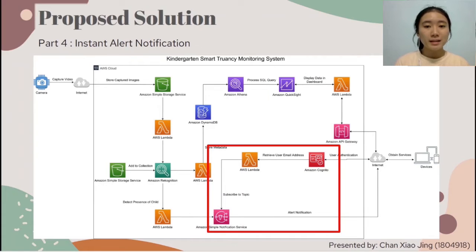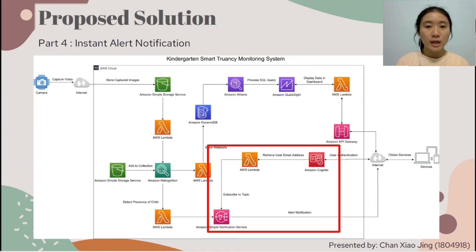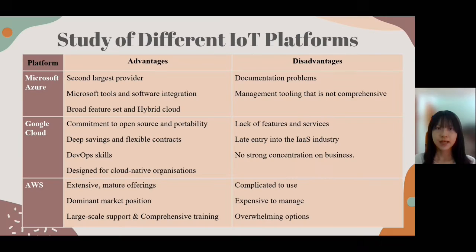The fourth part is instant alert notification. When a child or some children are detected, the system will send alert emails to the electronic devices of kindergarten staff and teachers through Amazon SNS. A Lambda function will retrieve email addresses from users who have logged into the system to enable topic subscription so that they can receive instant alert notifications.